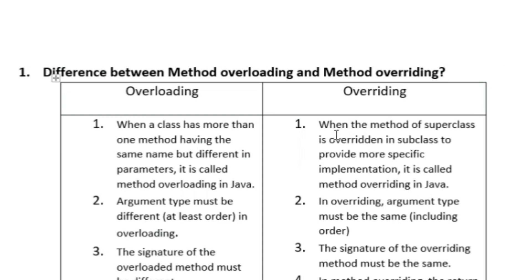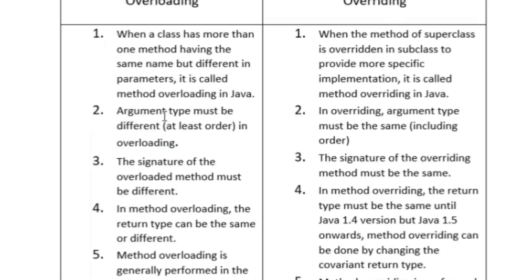The first question is: what is the difference between method overloading and method overriding? When a class has more than one method having the same name but different parameters, it is called method overloading — the method name is same but the method signature is different. Whereas overriding means when a method of a superclass is overridden in a subclass to provide a more specific implementation, it is called method overriding.